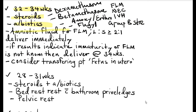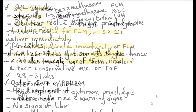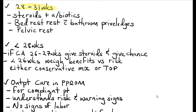You can also assess amniotic fluid for fetal lung maturity. If the lecithin-to-sphingomyelin ratio is more than 2:1, you can deliver the patient immediately. If results indicate immaturity or fetal lung maturity is not confirmed, you deliver the patient at 34 weeks gestational age after giving steroids. Also consider transferring the fetus in utero to a facility with a good neonatal intensive care unit.